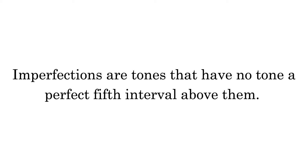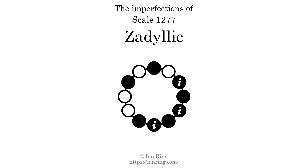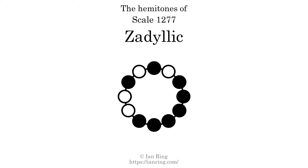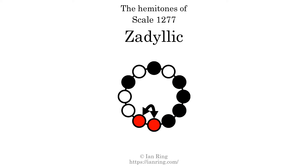Imperfections are tones that have no tone a perfect fifth interval above them. This scale has three imperfections, at three positions. Hammertones are instances where two tones in the scale are a semitone apart. This scale has five hammertones at five positions.